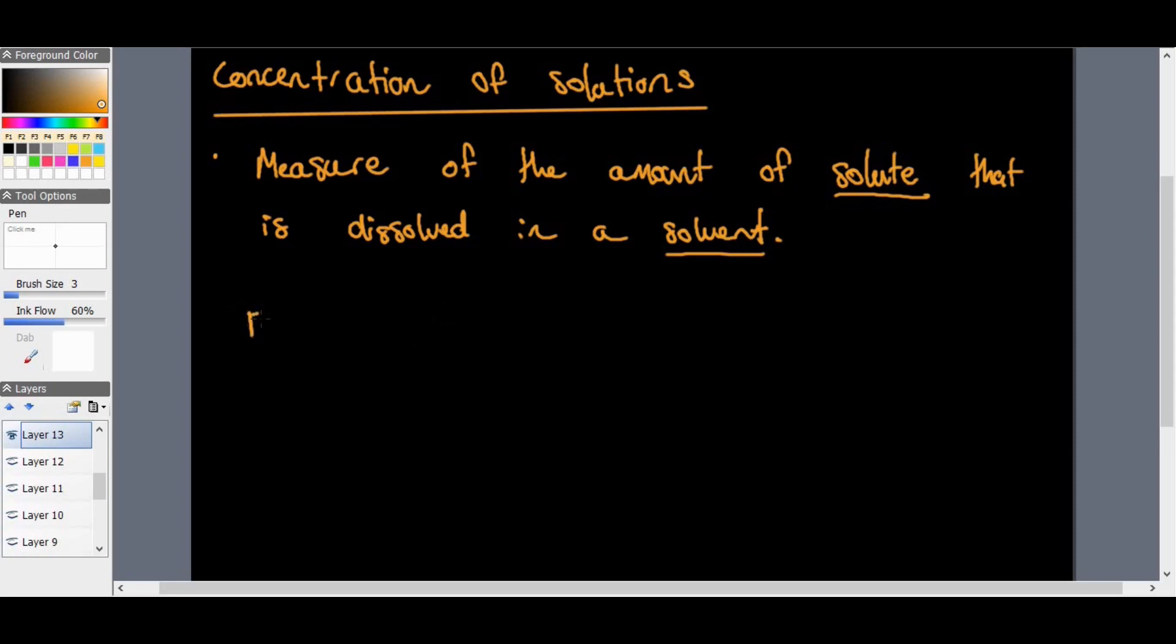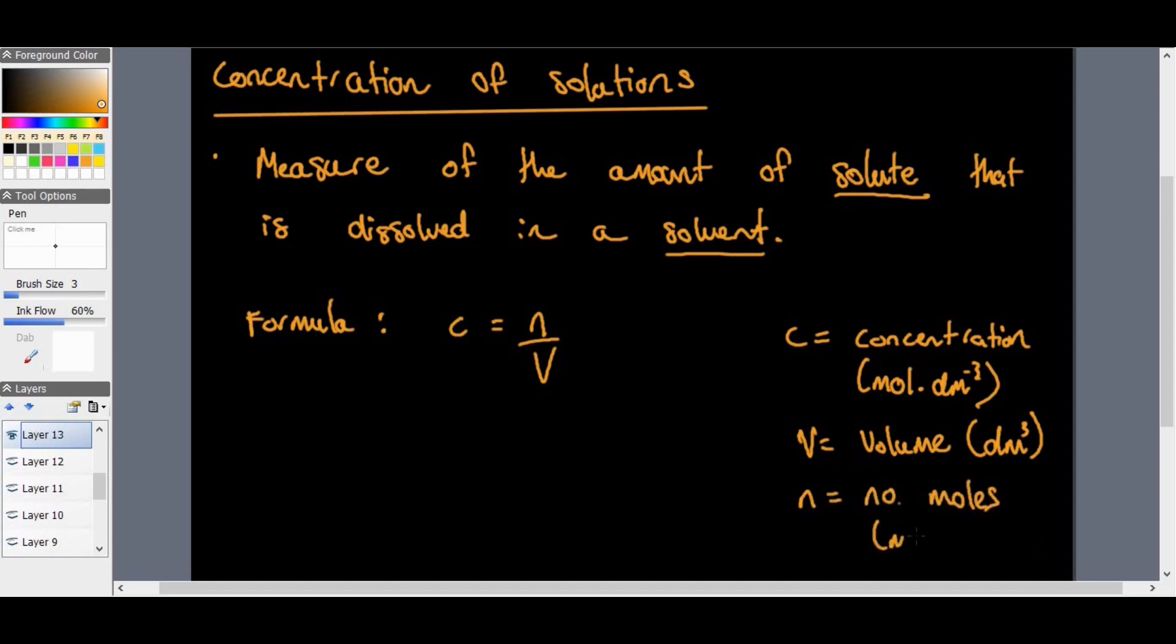The formula for calculating the concentration of solutions is known as follows. C is equal to N over V. In other words, where C is equal to the concentration and it is measured in mole per decimeter cubed. V is volume and that is measured in decimeters cubed. And then N, of course, is number of moles, which we know what that's measured in is measured in mole.